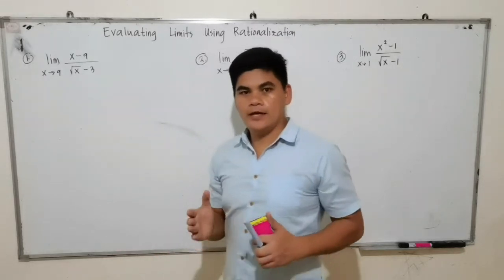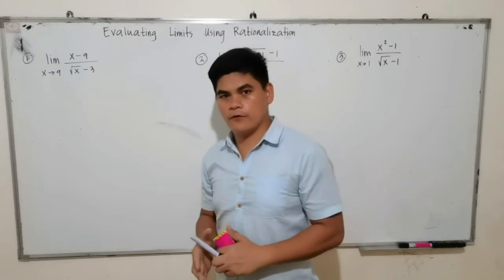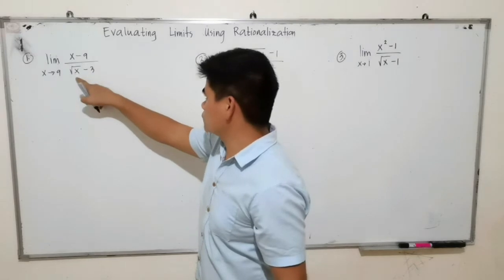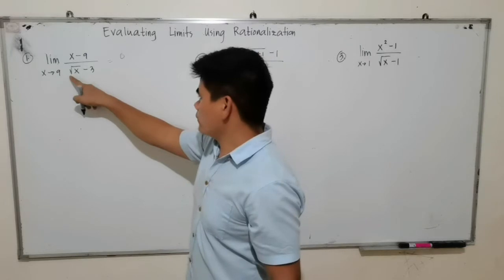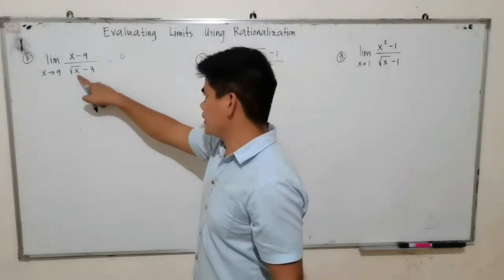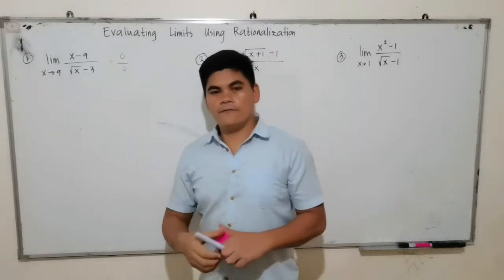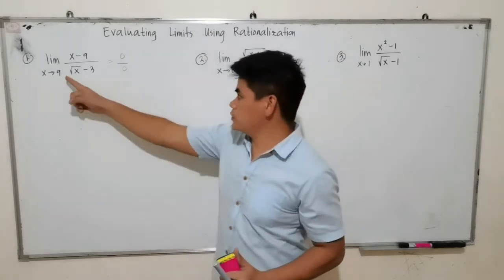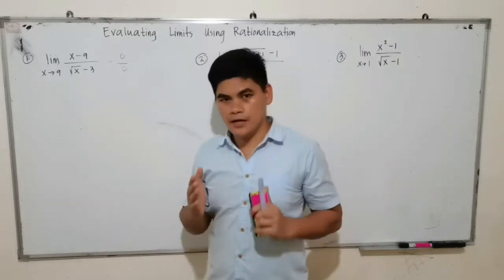These are sample functions in indeterminate form. What is indeterminate form? If you try to substitute 9 for every x in the function, that will be 9 minus 9 equals 0, and square root of 9 minus 3 is 3 minus 3, which is 0 over 0. If the function gives 0 over 0 when you substitute the value of C, then that function is indeterminate.